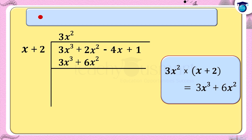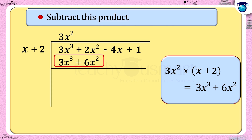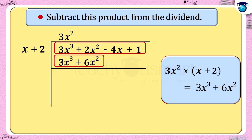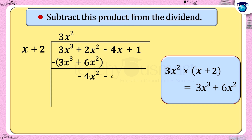Step 4: Subtract this product 3x³ + 6x² from the dividend 3x³ + 2x² - 4x + 1. We get -4x² - 4x + 1 as the remainder.